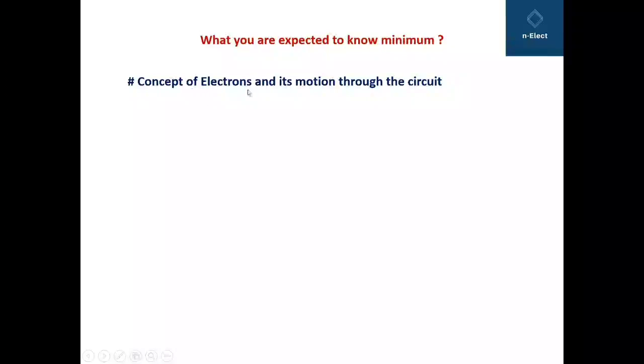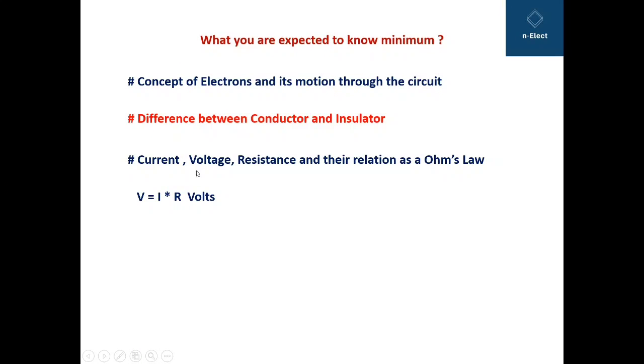The concept of electrons and its motion through the circuit, that is the flow of current you can say. Difference between conductor and insulator, current, voltage, resistance and their relation as Ohm's law, that is V is equal to I into R, and this voltage is measured in volts.